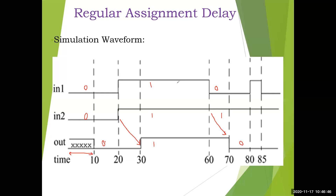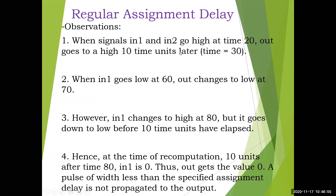In the regular continuous assignment statement, we provide the delay and this is how it is observed in the waveform. When signals in1 and in2 go high at time 20, out goes high 10 time units later at 30. When in1 goes low at 60, out changes to low at 70. However, in1 changes to high at 80 but goes low before 10 time units have elapsed, so a pulse shorter than the specified assignment delay is not propagated to the output.